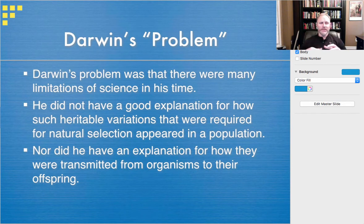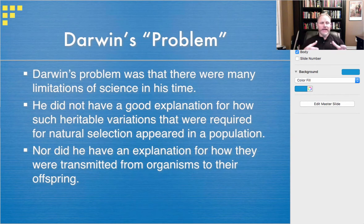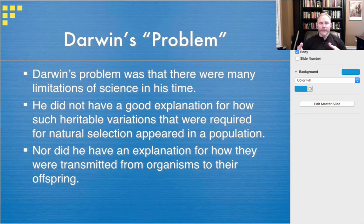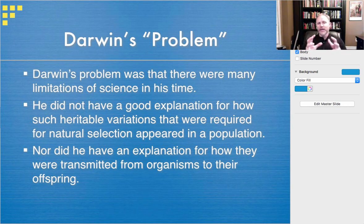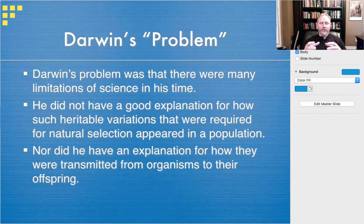Darwin's problem was that there were a lot of limitations of science at the time. Back in the 1800s, he didn't have a good explanation for how heritable variations — the differences in genotypes — were required for natural selection and how they appeared in a population. He didn't have any explanation for how they get transmitted from one organism to the next. They knew about reproduction, but the discrete traits Mendel was describing, Darwin didn't really know anything about. He had some intuition, but concrete evidence wasn't really available to him.